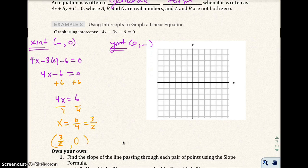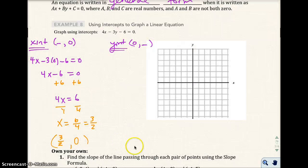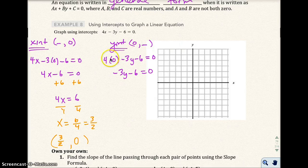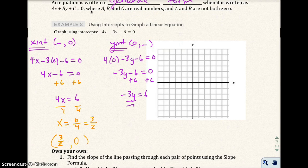To find the y-intercepts are very similar, all you're going to do is plug in 0 now for x. So I get 4 times 0 minus 3y minus 6 equals 0. So I get -3y minus 6 equals 0. And this drops out, because that's just 0. Add 6 to both sides. So I get -3y equals 6. Divide by -3. I get y equals -2. So my y-value is -2. And remember, I put in 0 for x. That goes right there.